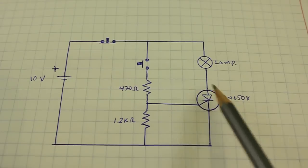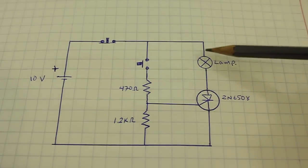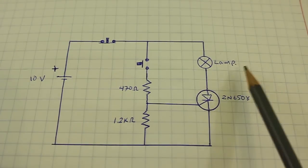Then the thyristor is now conducting, is on, and the current can flow through the lamp so the lamp turns on.